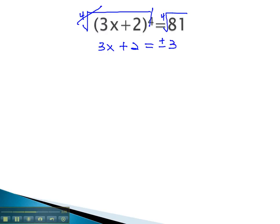We can then continue solving by subtracting 2. Treating those like unlike terms, we get 3x equals negative 2 plus or minus 3.